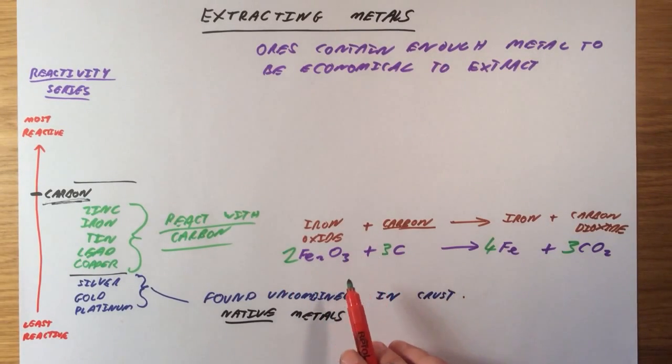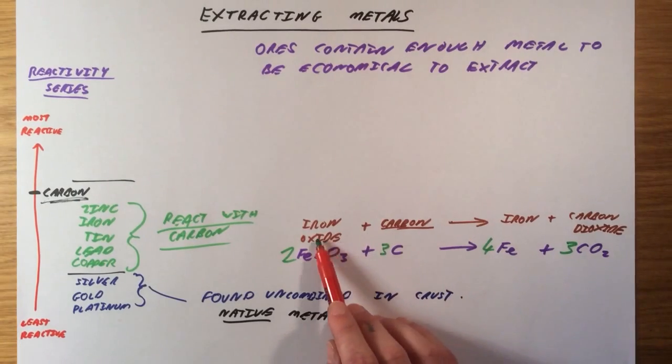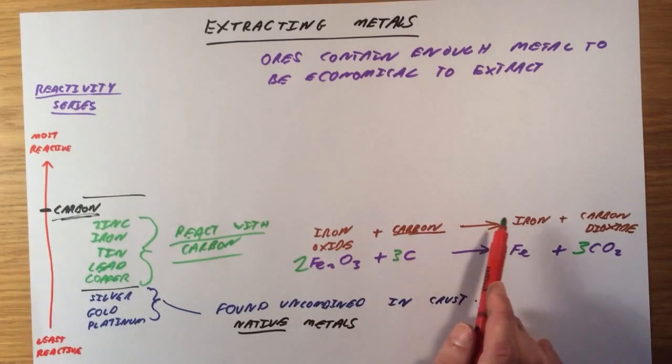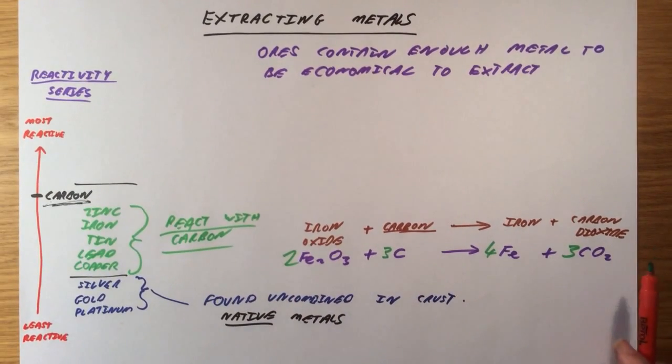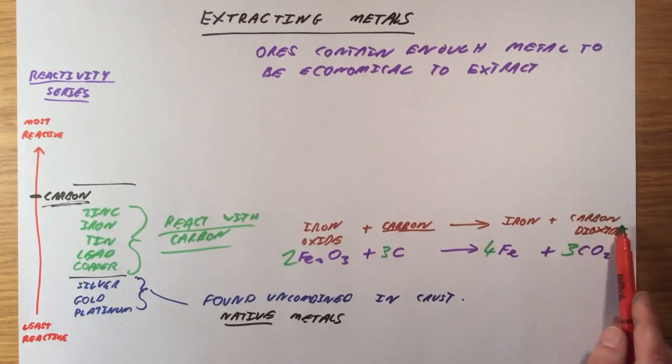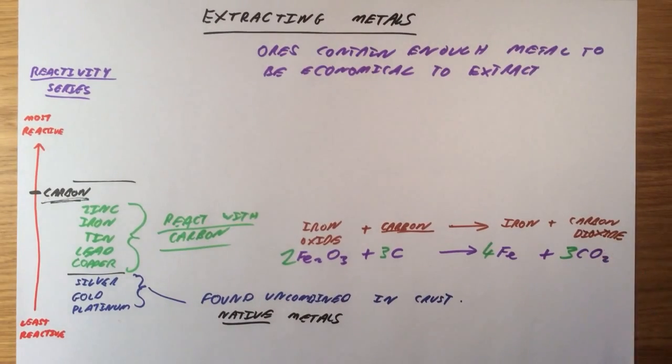So that reaction is an example of the extraction of iron from iron oxide. We actually call this a reduction reaction, and the reason we call it a reduction is because carbon is removing oxygen from iron oxide. It's reducing iron oxide to leave iron. If you get asked about oxidation, oxidation is the opposite process. It's adding oxygen. So here, carbon is oxidized to form carbon dioxide. Oxygen is added to it.